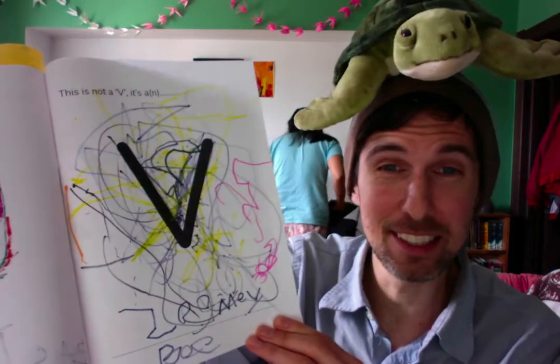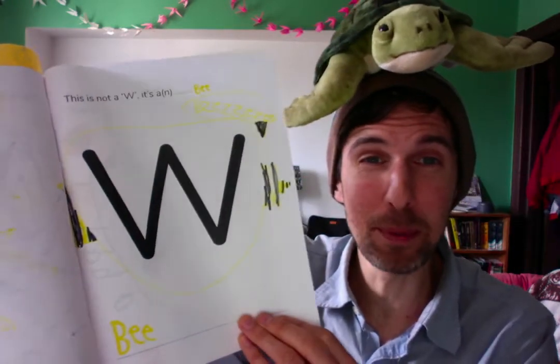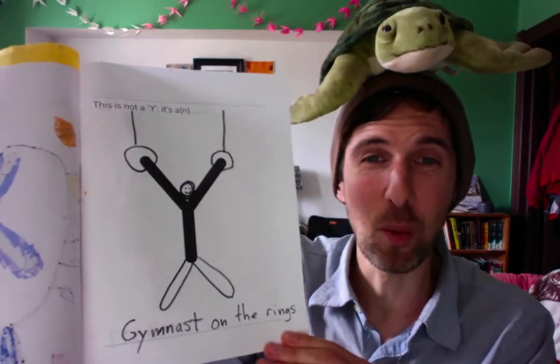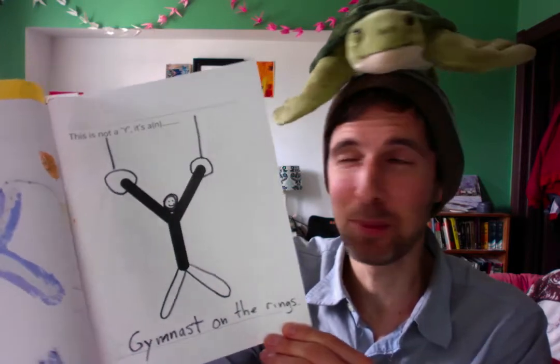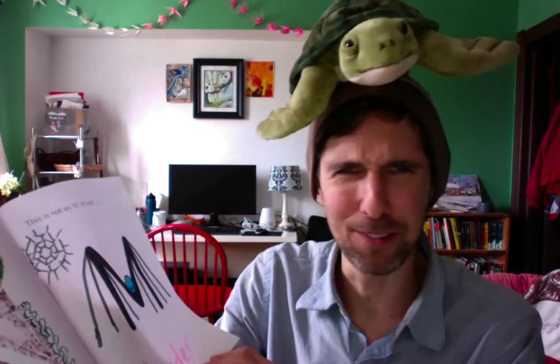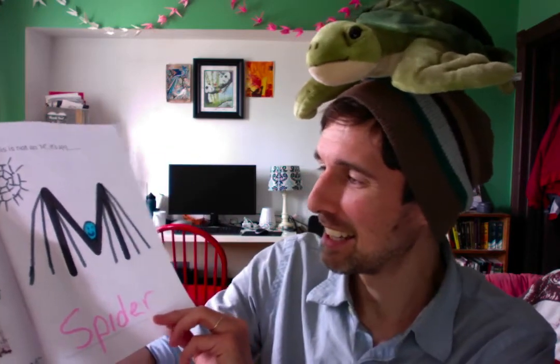This is not a V, it's a Zoomy box, I think — I'm not sure what that says. This is not a W, it's a B. This is not an X, it's a long-mouthed clam eater. This is not a Y, it's a gymnast on the rings. This is not a Z, it's a tree. This one's out of order because the Z is the last letter of the alphabet, right? That's not an M, it's a spider.